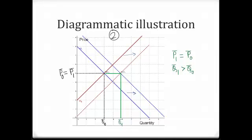The new demand curve and new supply curve intersect at the point equilibrium sub 1. Equilibrium price is P1 bar — observe it is the same as P0 bar. Equilibrium quantity, Q1 bar, is higher than Q0 bar. Because the relative strength of the demand and supply factors were the same, when they counteract each other, they exactly offset each other in their effect on equilibrium price. Therefore, equilibrium price remains unchanged.